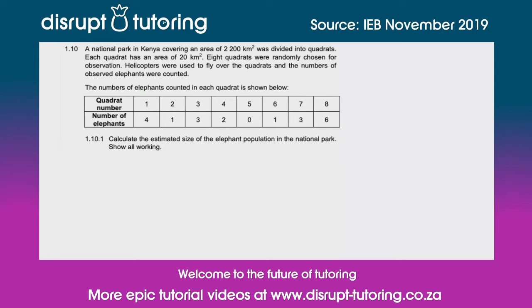So here we can see our table. We've got quadrat number from 1 through to 8 and the number of elephants within each of those quadrats. Calculate the estimated size of the elephant population in the national park.